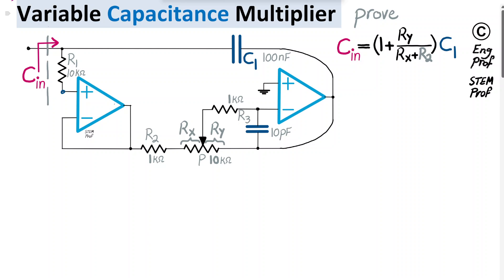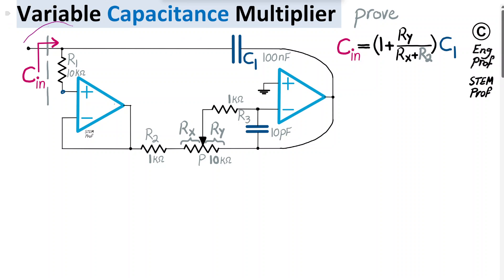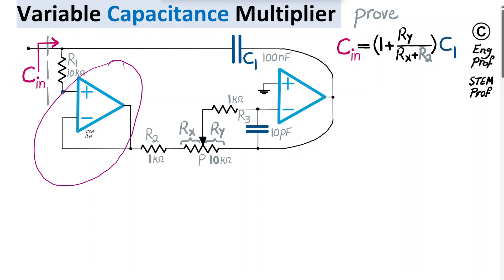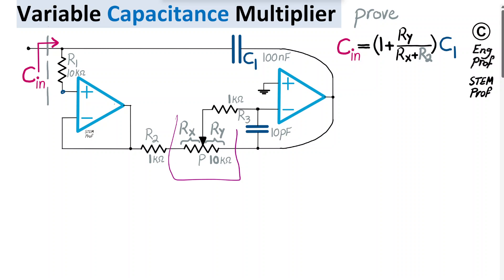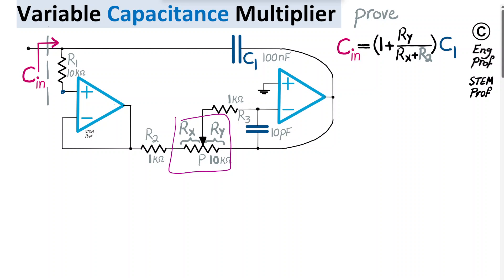An implementation and analysis of a variable capacitance multiplier is discussed in this video. This circuit is useful in applications where an adjustable large value of capacitor is needed. It is implemented with two operational amplifiers, or op-amps, and one potentiometer with a nominal value of 10 kilohms. It is shown as an analog potentiometer, but in an alternative implementation this can be realized using a digital potentiometer or RDAC.